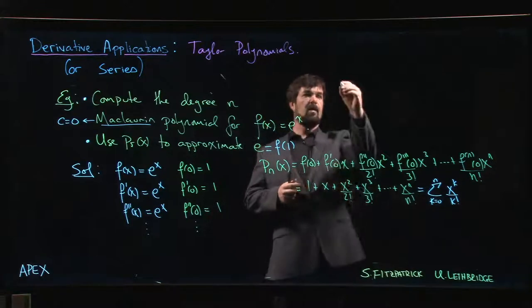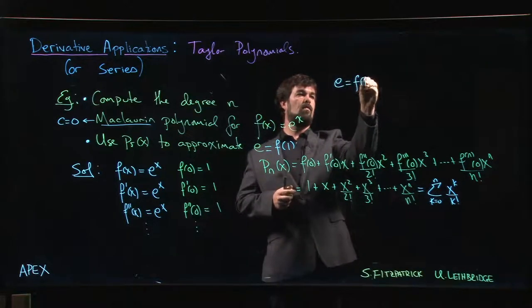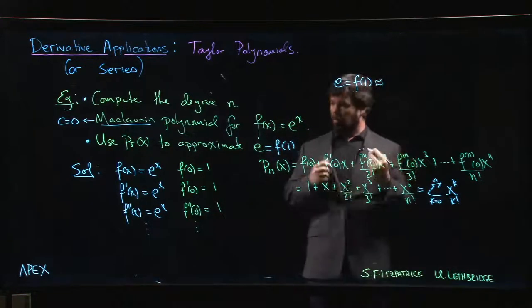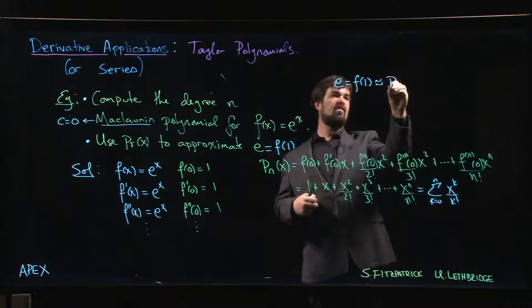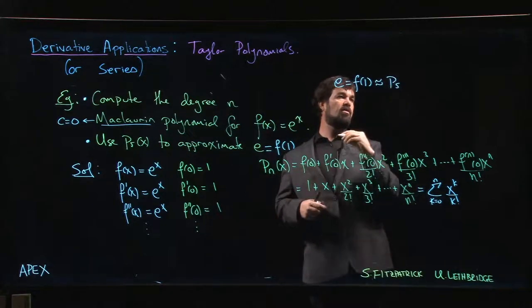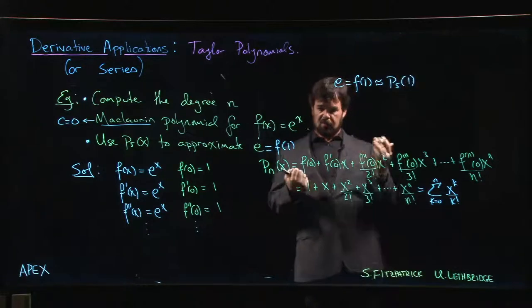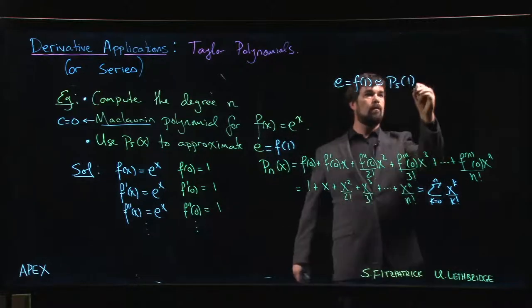So how is that going to work? What that means is we want to say that e is f(1), and the whole point of these Taylor polynomials is they're supposed to approximate the original function. So f(1) should be approximately P5(1). This approximation should, in theory, be better than the linear approximation.